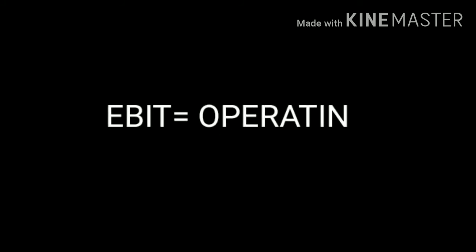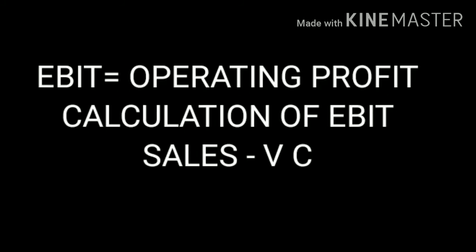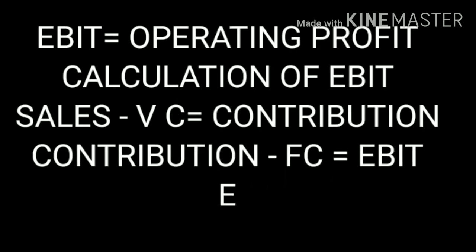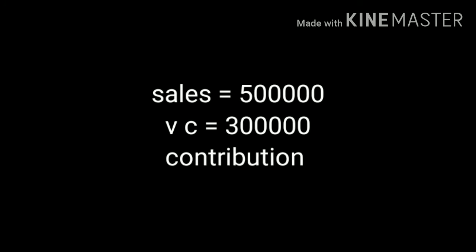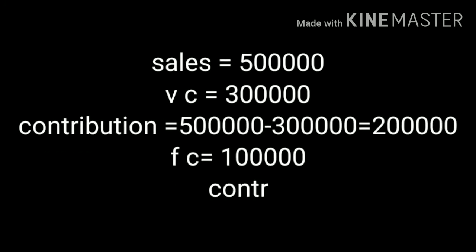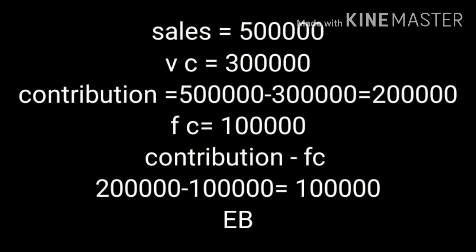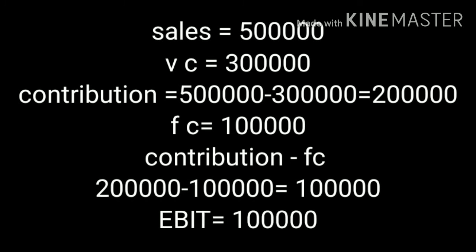First we want to find out EBIT. Sales, variable cost, and fixed cost are given, so we can easily find out operating profit or EBIT. Sales minus variable cost gives contribution, then deduct fixed cost from contribution to get operating profit or EBIT. Sales is 5 lakh minus variable cost 3 lakh, so contribution is 2 lakh. Then 2 lakh minus fixed cost 1 lakh gives EBIT of 1 lakh.